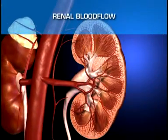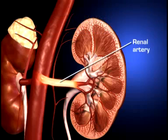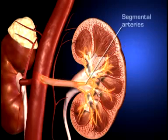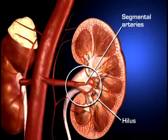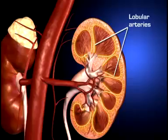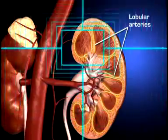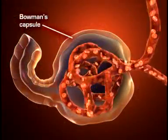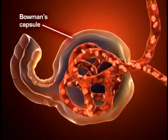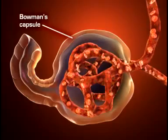Each kidney is supplied with blood by a single renal artery that arises on its respective side of the aorta before dividing into five segmental arteries that enter the hilus. Within the kidney, each segmental artery branches into several lobular arteries. The lobular arteries further subdivide to form interlobular arteries, which branch off into afferent arterioles.